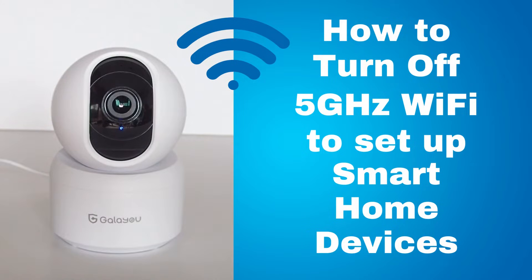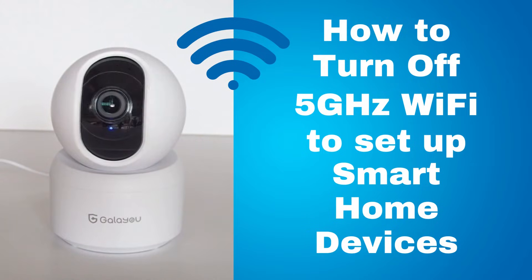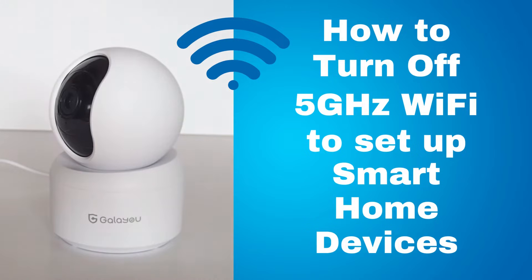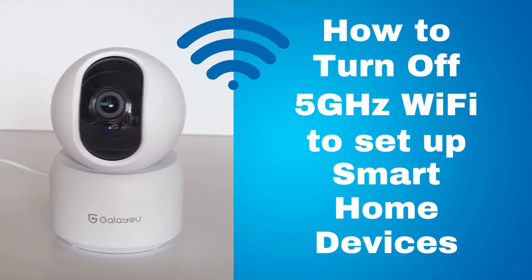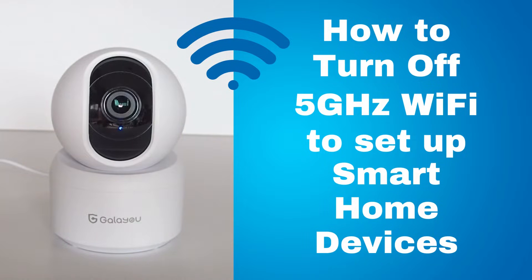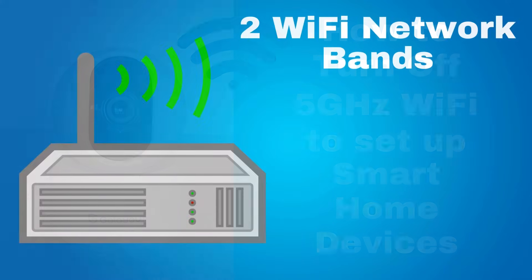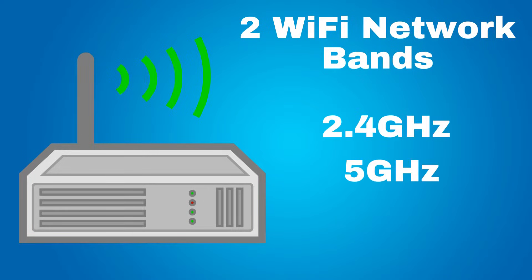Hi, this is Rob. There are some home smart devices like this home security indoor camera that is controlled with an app, and this camera needs to be set up on your home Wi-Fi network. But it needs to be set up using a 2.4 GHz Wi-Fi network band. Currently there are two types of Wi-Fi network bands in the home: 2.4 GHz and 5 GHz.